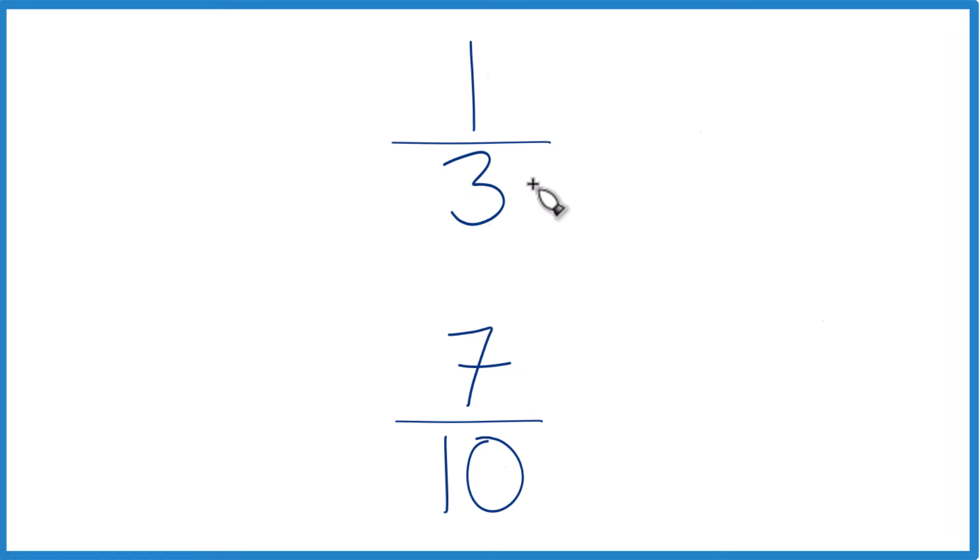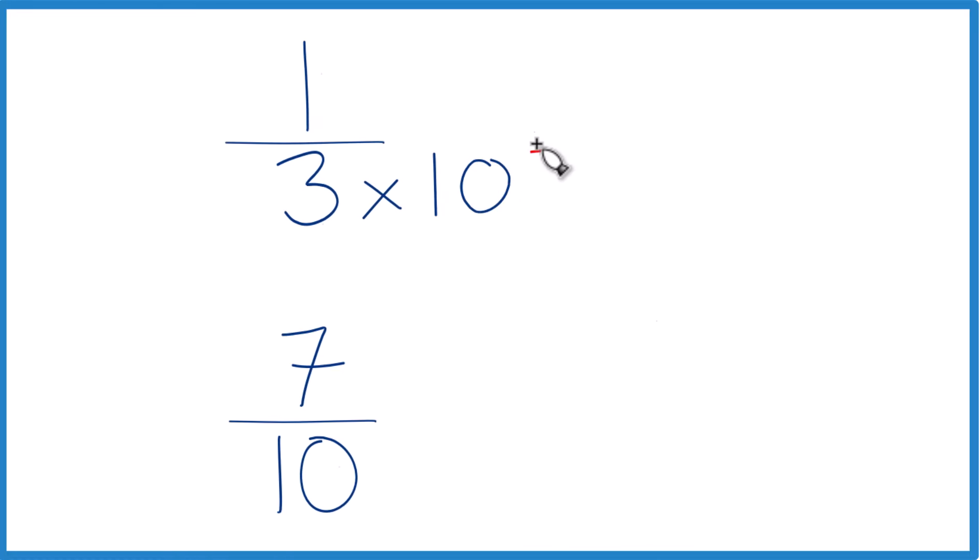So I'm going to multiply three times ten, because three times ten equals thirty. And down here, I'm going to multiply ten times three, because that also equals thirty.